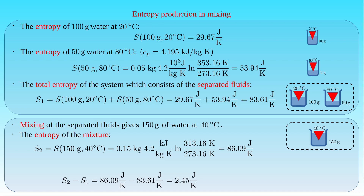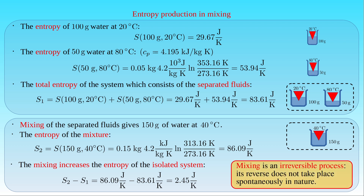This result shows that the mixing of water at two different temperatures increases the entropy of the isolated system. The entropy production of this experiment demonstrates that mixing is an irreversible process, and its reverse does not take place spontaneously in nature. If we mix water at two different temperatures, the mixture never separates into two different regions with different temperatures in a spontaneous process.